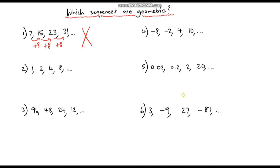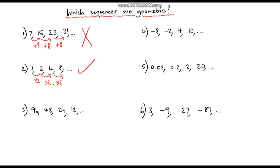Number 2: to go from 1 to 2, if this were geometric I'd be multiplying by 2, or doubling. I'm doubling from 2 to 4 — multiplying by 2 — and from 4 to 8 again multiplying by 2. So yes, this is a geometric sequence because we have a common ratio of 2.